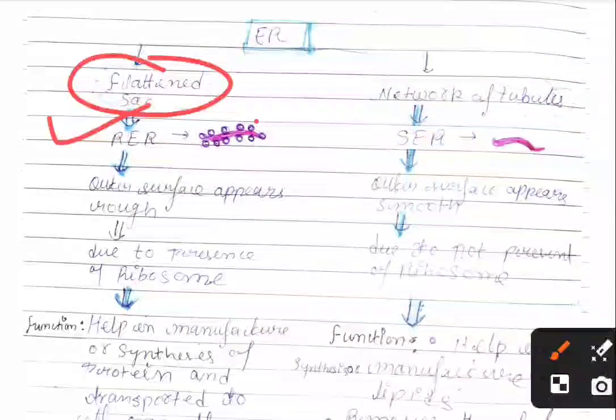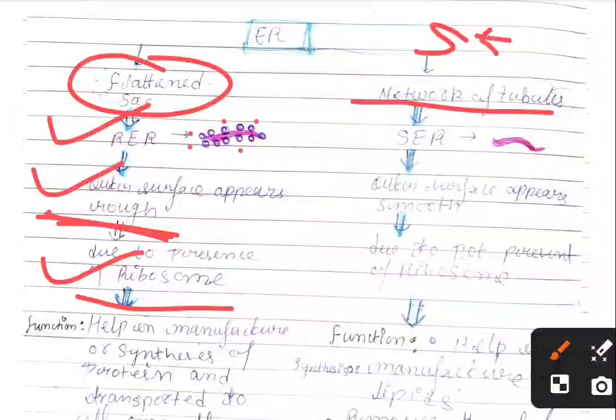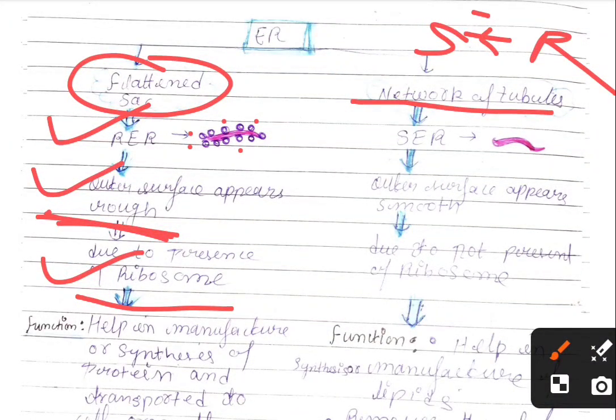This is a network of tubular structures. In smooth endoplasmic reticulum, the outer surface is smooth and ribosomes are absent.